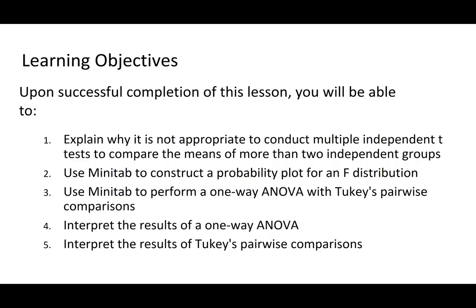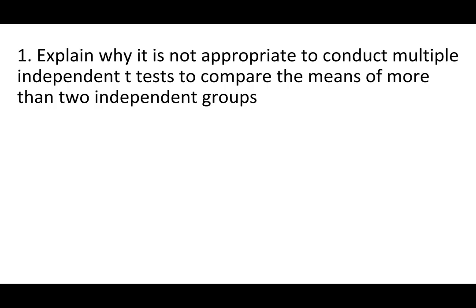We'll start now with the first learning objective: explain why it is not appropriate to conduct multiple independent t-tests to compare the means of more than two independent groups. ANOVAs are used to compare the means of three or more independent groups. One of the first questions students usually ask is, why can't we just do a series of independent means t-tests to compare all the possible pairs of groups?